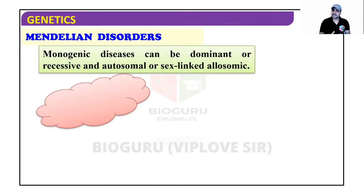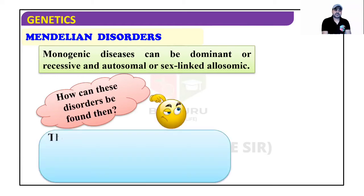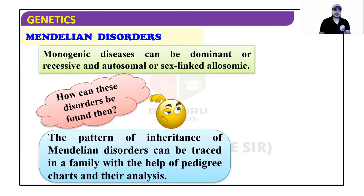The types are: autosomal dominant, autosomal recessive, X-linked dominant, and X-linked recessive. Allosomic refers to disorders on sex chromosomes, and autosomal refers to disorders on autosomes. The pattern of inheritance of Mendelian disorders can be traced in a family with the help of pedigree analysis.